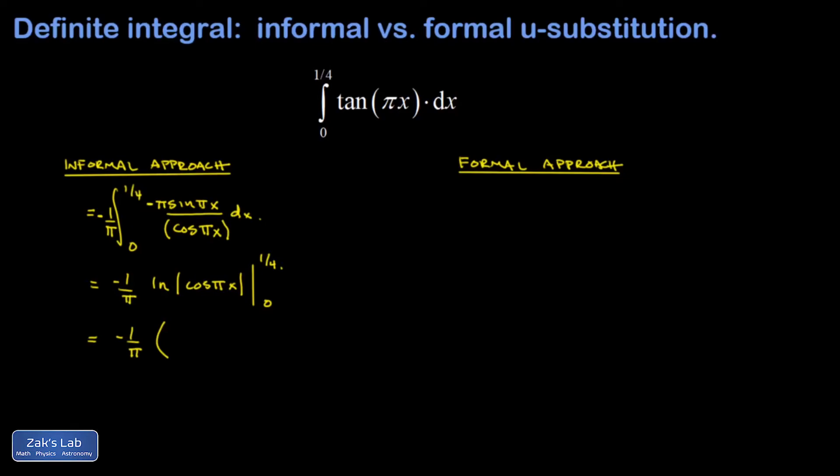I don't need the absolute value signs because the cosine of pi over four is a positive thing. Then I get minus natural log cosine of zero, which is one. So minus natural log of one. Again, the absolute value bars don't matter once I realize that I have a positive thing in there, and the natural log of one is zero, so that's gone.